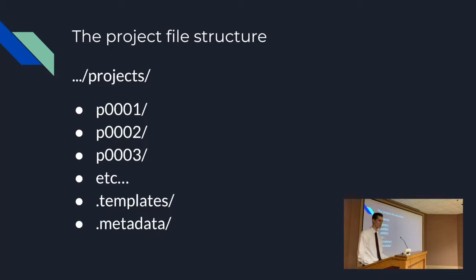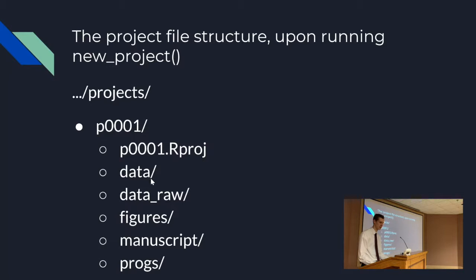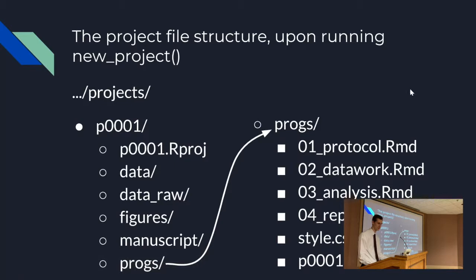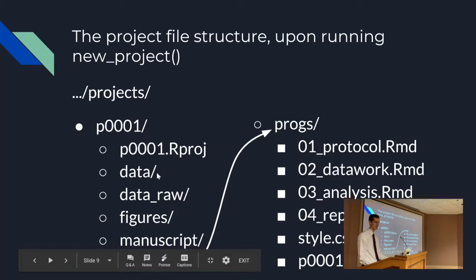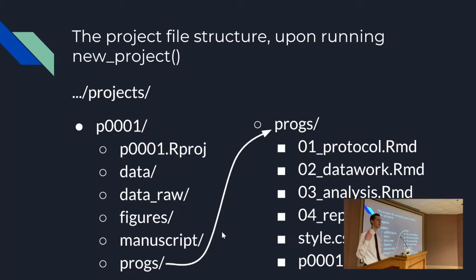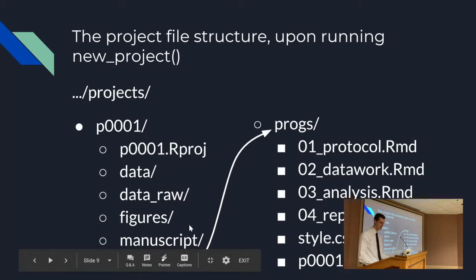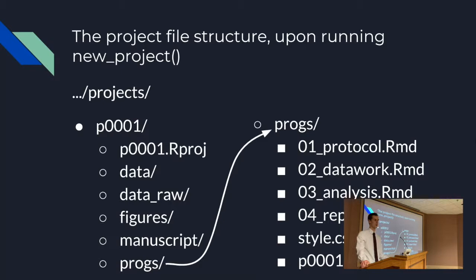This is what the overall projects folder looks like. Inside a singular project folder — when you run the command new_project — you get a folder like P0001_project_0001. Inside that you have five subfolders plus an .Rproj file. The first four folders are empty: data, data-raw, figures, manuscript. The idea is just to help you get things organized. The one folder that is not empty is progs, which contains four R Markdown templates: protocol, data_work, analysis, report.